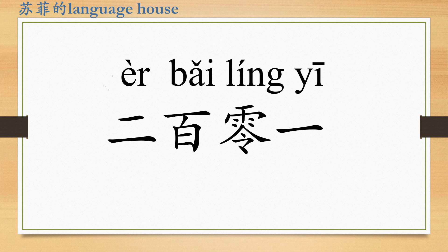Er bai ling yi. Er bai is two hundred, ling is zero, yi is one. So er bai ling yi is two hundred and one. Now read after me: er bai ling yi, er bai ling yi.